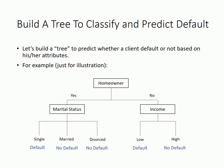Maybe we can build a tree to predict whether a client will default or not based on their attributes. For example, this tree classifies clients first based on home ownership, and then, depending on home ownership, further classifies clients by marital status or income. Based on this tree, if a client is a homeowner and single, then it predicts that this client will default. The accuracy of this prediction depends on how good the classifications are, so the key is to classify the attributes well.